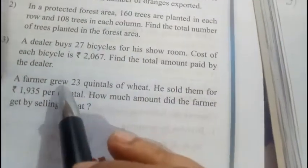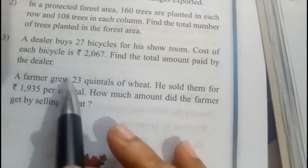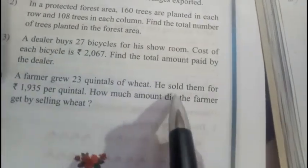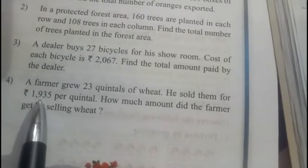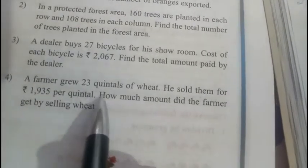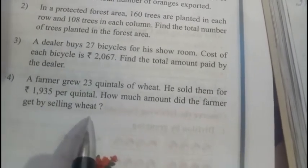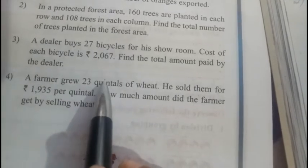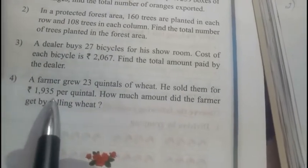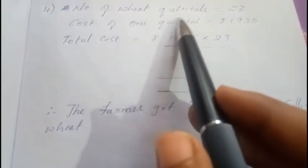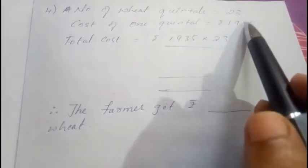He sold them for ₹1,935 per quintal. How much amount did the farmer get by selling? Number of wheat quintals is equal to 23. Cost of one quintal is equal to ₹1,935. So your total cost means you need to multiply.